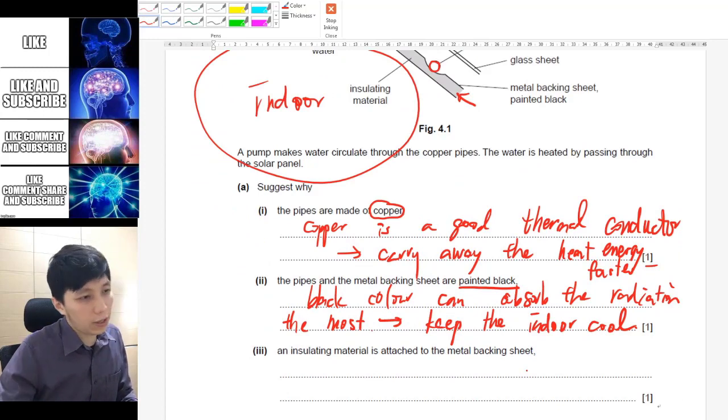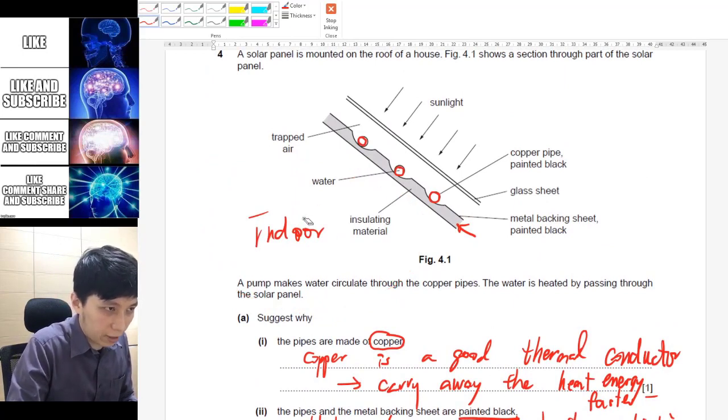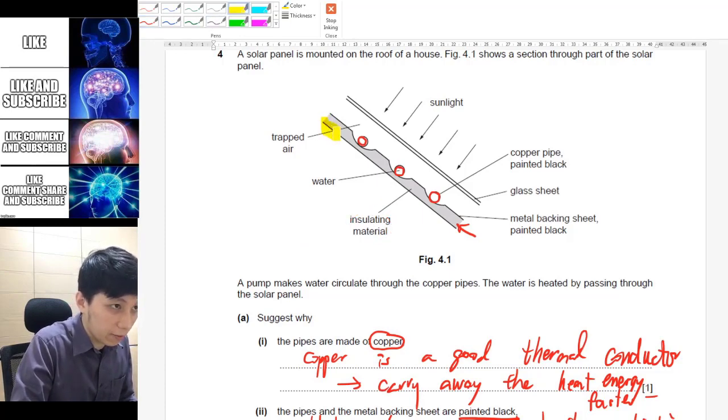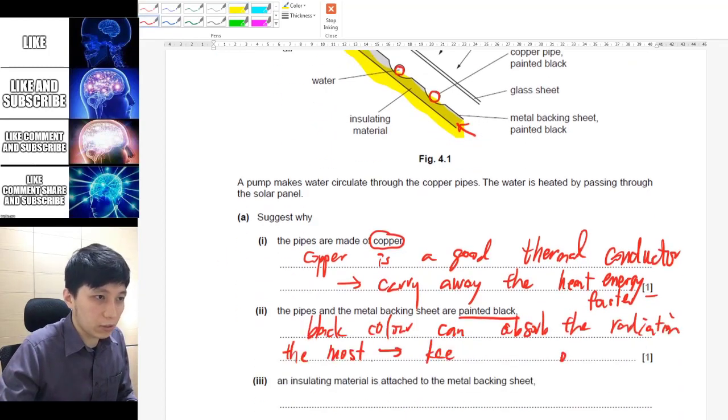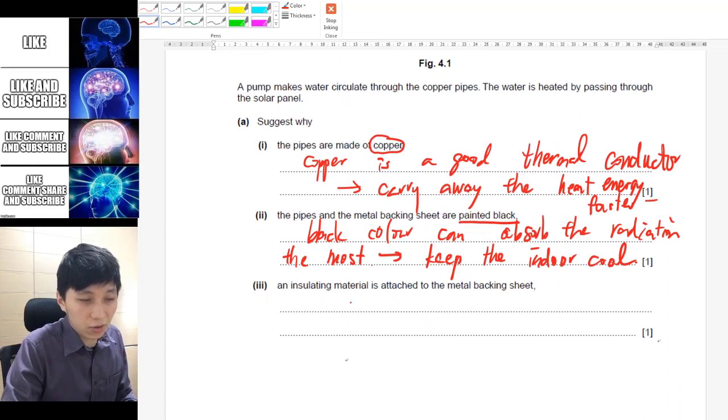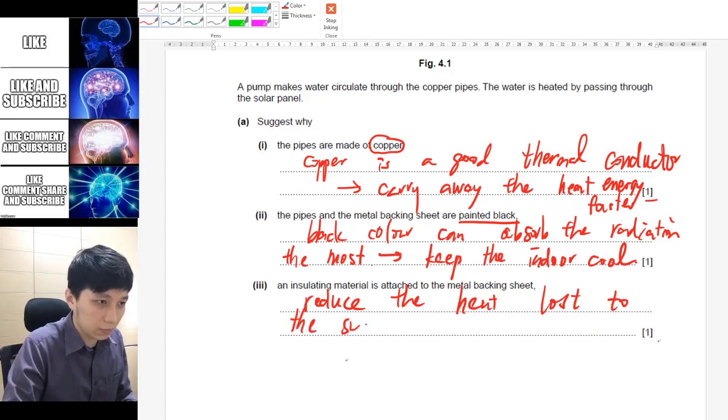Number three, asking you why there is insulating material attached to the metal backing sheet. So if you look at the picture very carefully now, you can see that here are the insulating materials, so I believe they are talking about right here. Why we need that insulation? So obviously when you say insulating, it's something to do with conduction. We would want to reduce the heat lost to the surrounding by conduction.